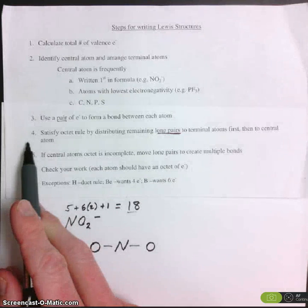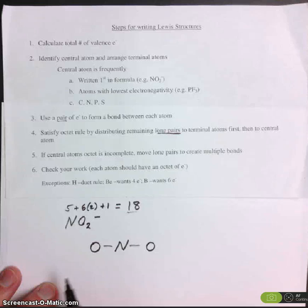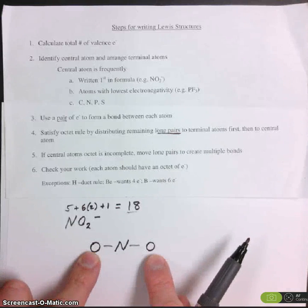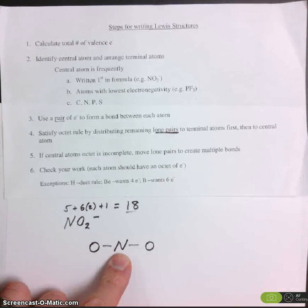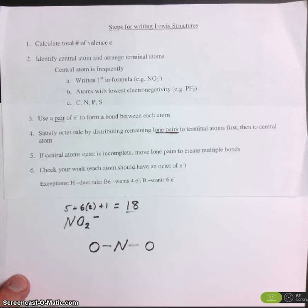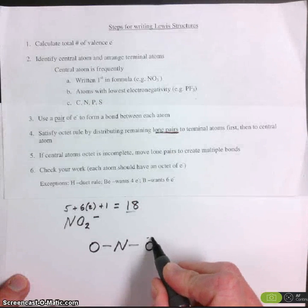Step number 4. Distribute remaining lone pairs to the terminal atoms first and then to the central atom. So we have 14 left. Let's start by distributing to the terminal atoms first.